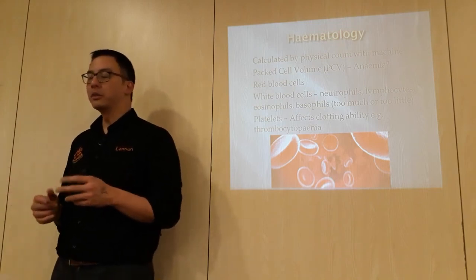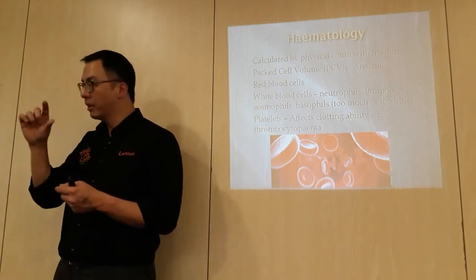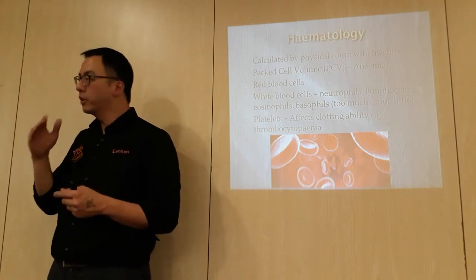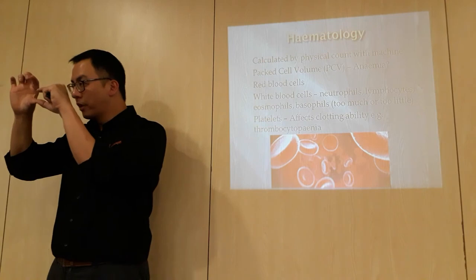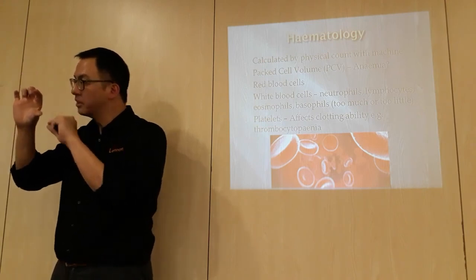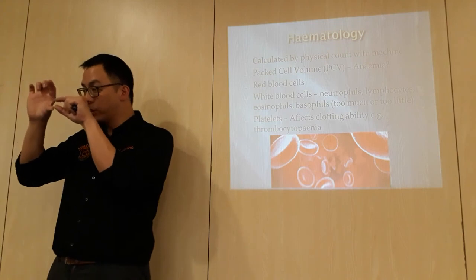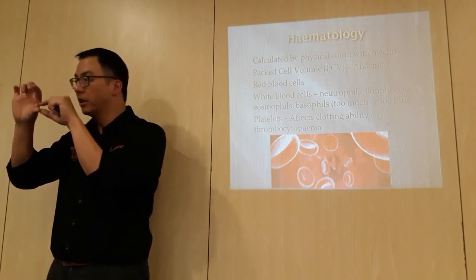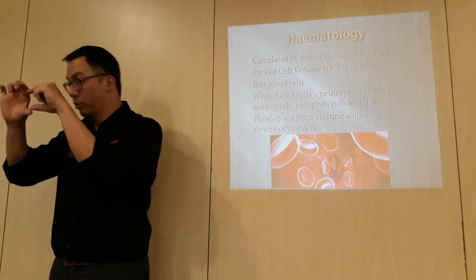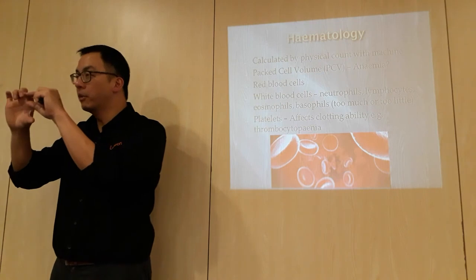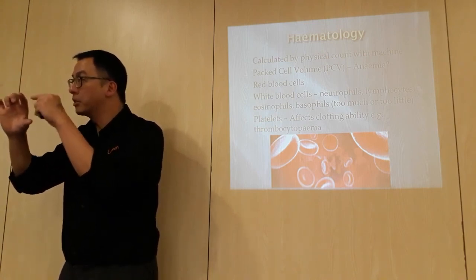The packed cell volume, or PCV, is used to assess anemia. It is the proportion of red blood cells, expressed as a percentage. For dogs, the normal range is 45 to 55 percent. If only 25 percent is red blood cells with a large amount of fluid on top, the animal is probably anemic. If 80 percent is red blood cells with very little fluid, that suggests dehydration.